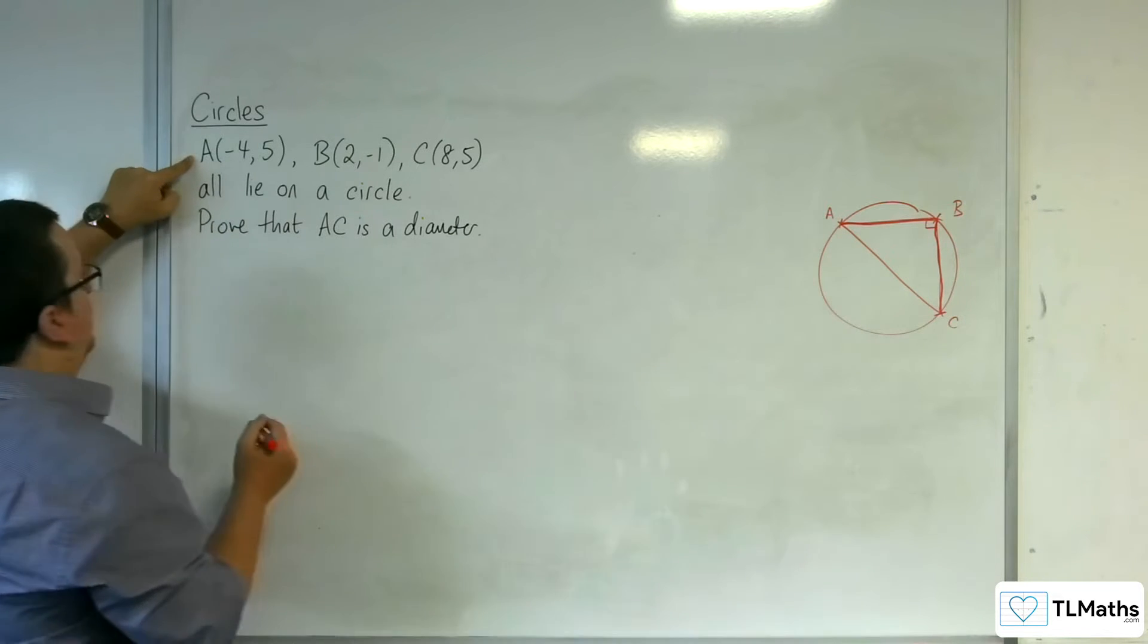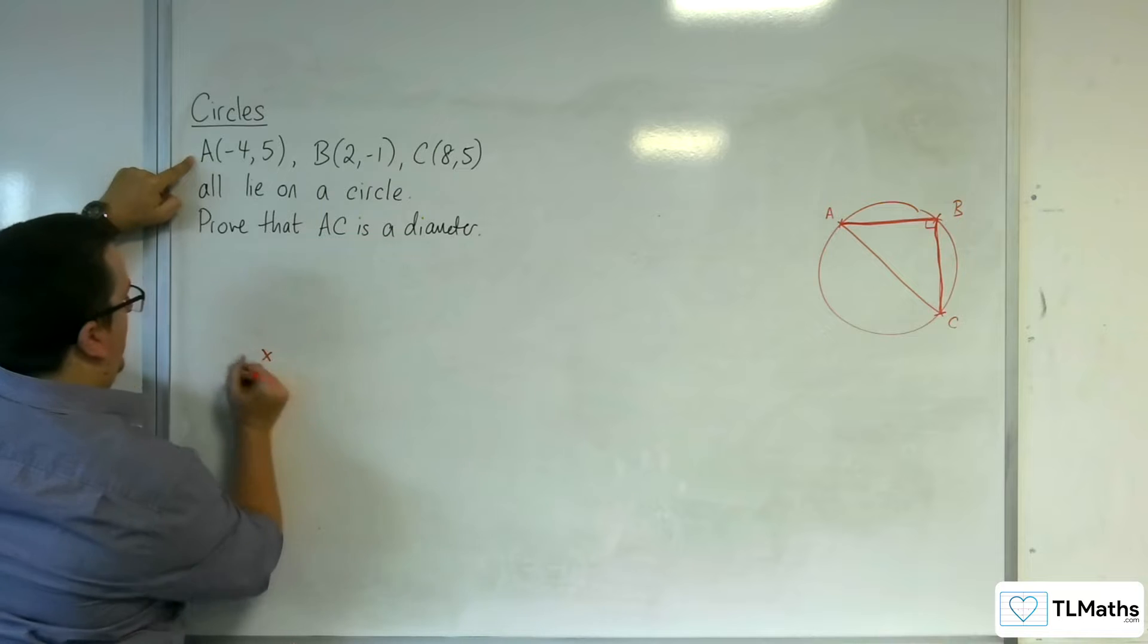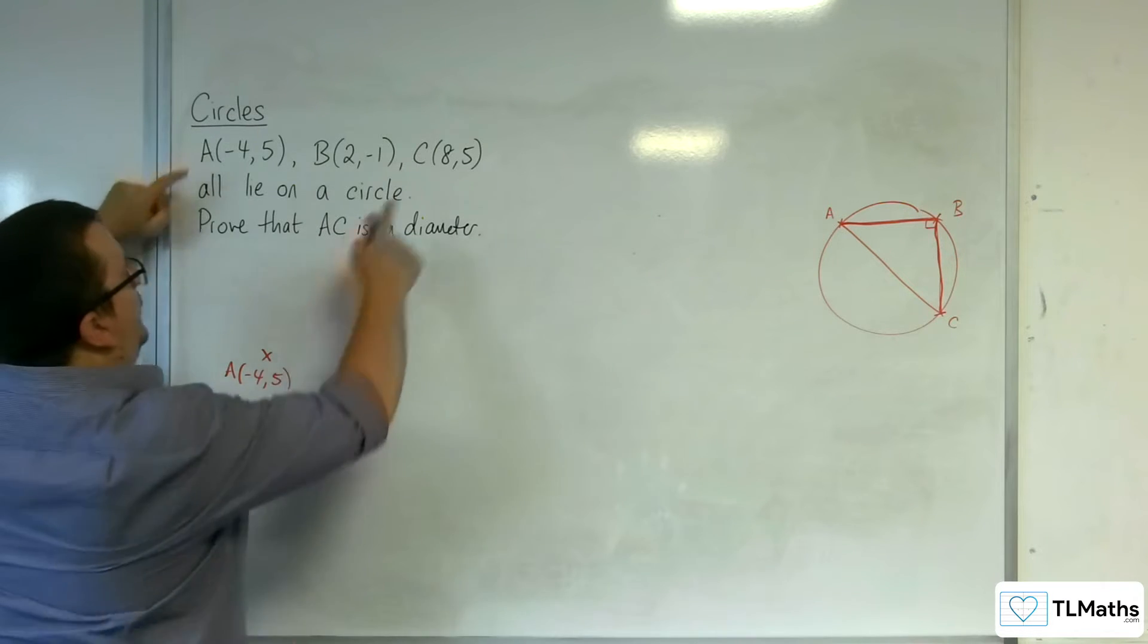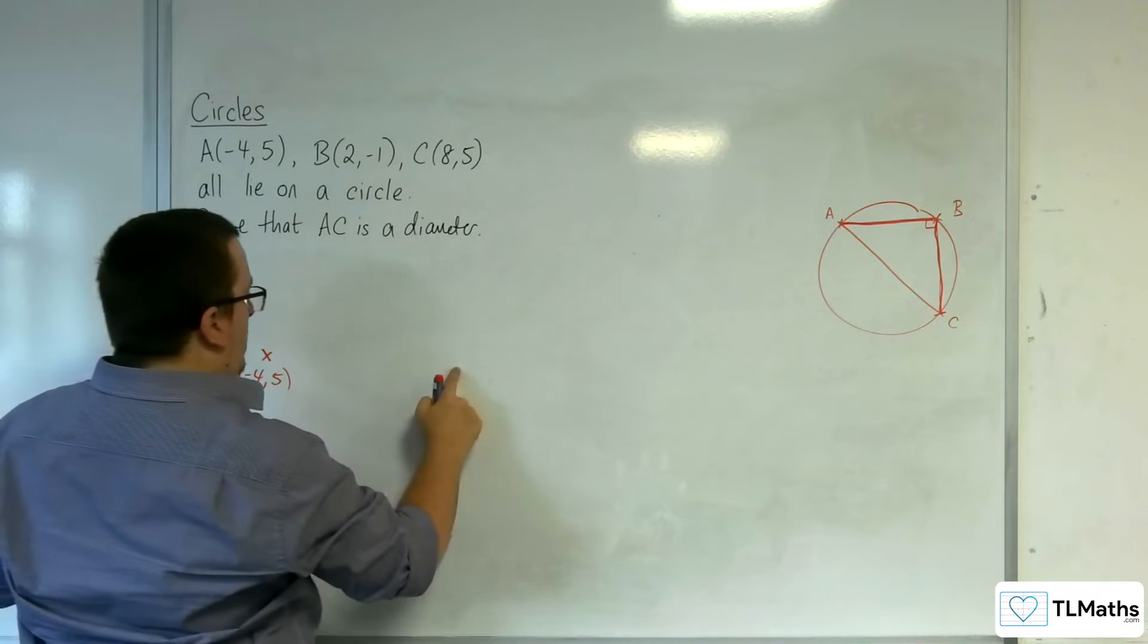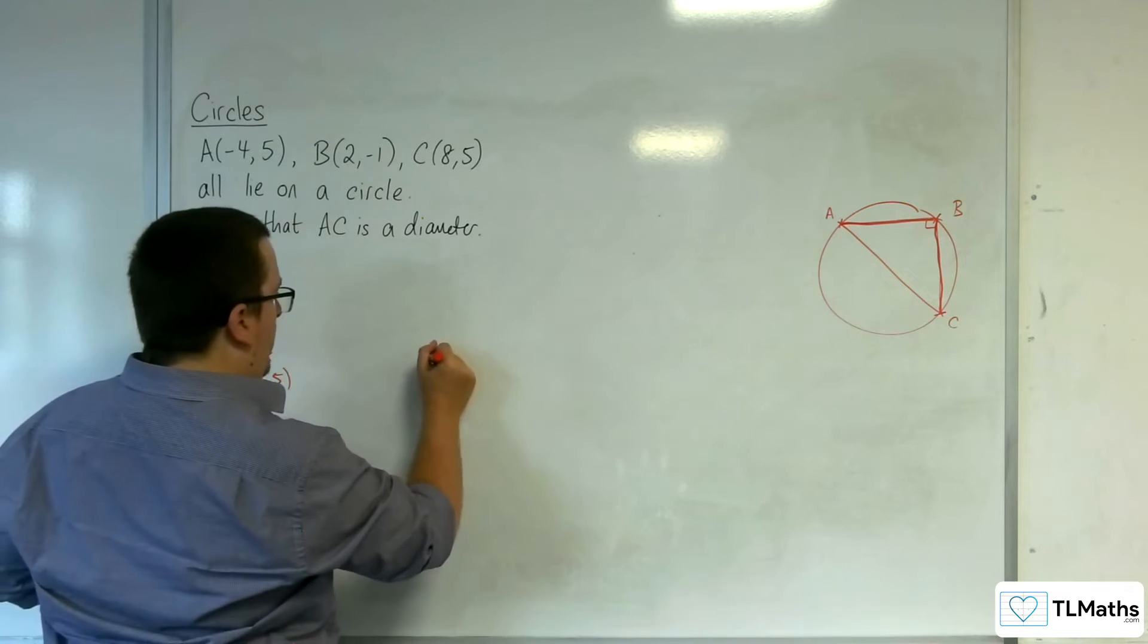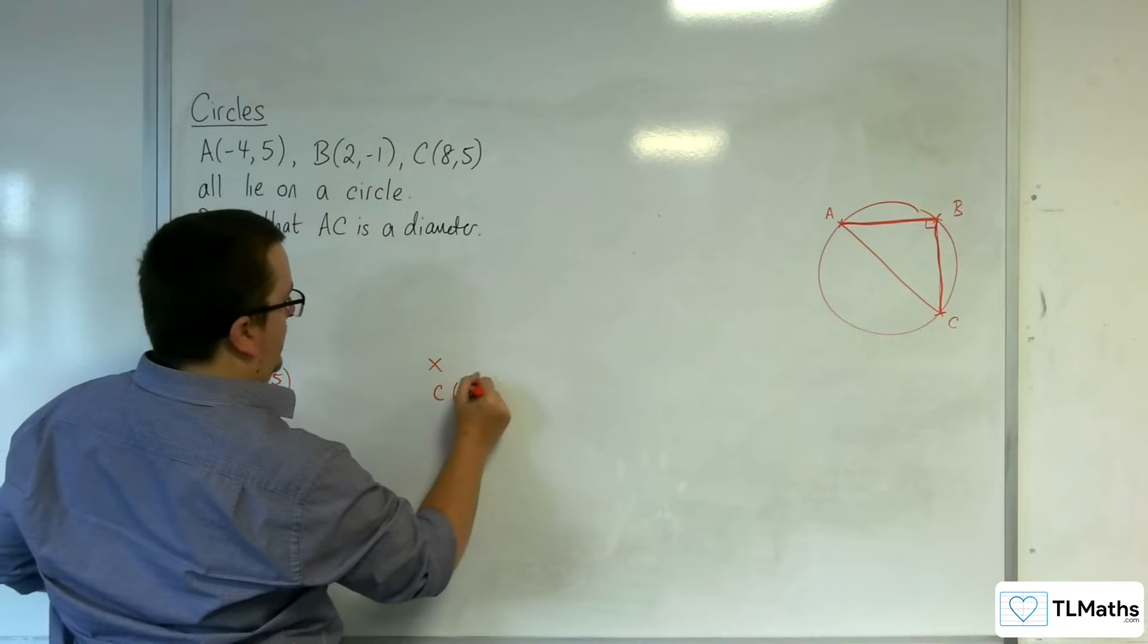We've got A at minus four, five. So, let's pop A here. Now, C is eight, five, so it's further along, but it's got the same Y coordinate. So, we're going to be somewhere over here. So, here's C at eight, five.